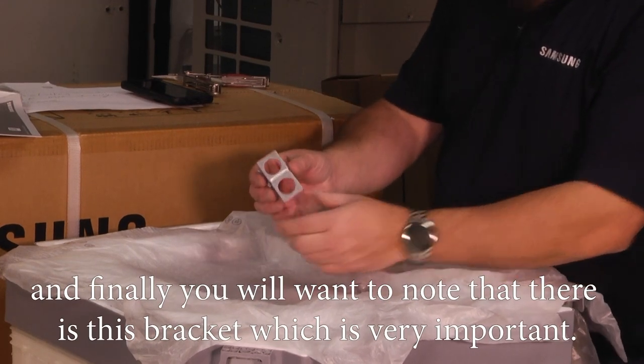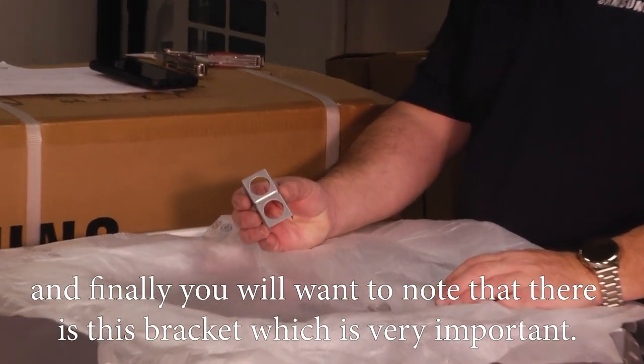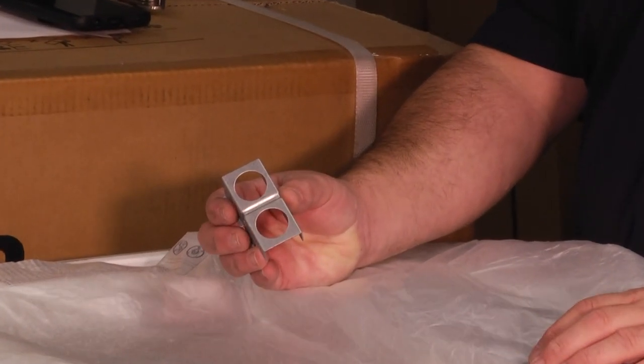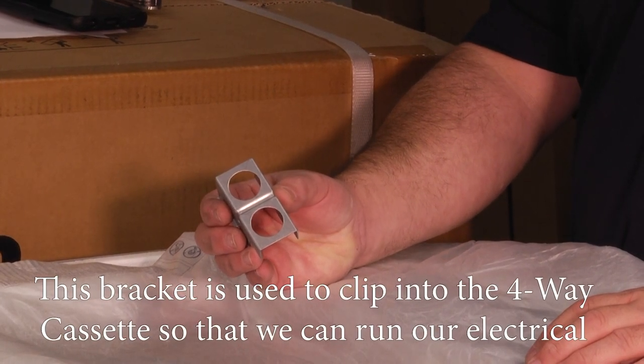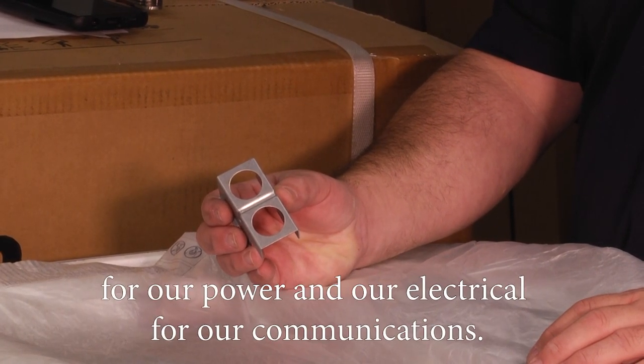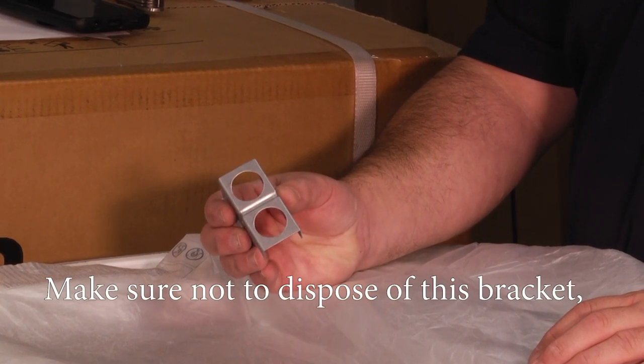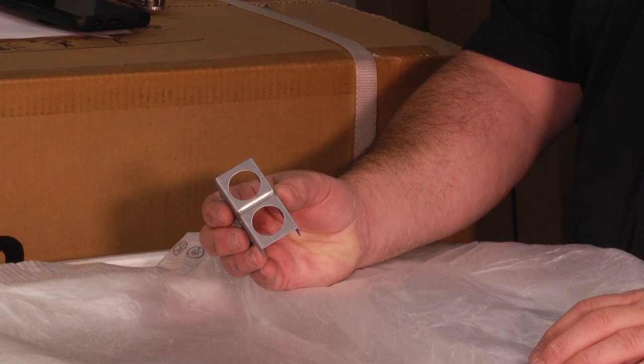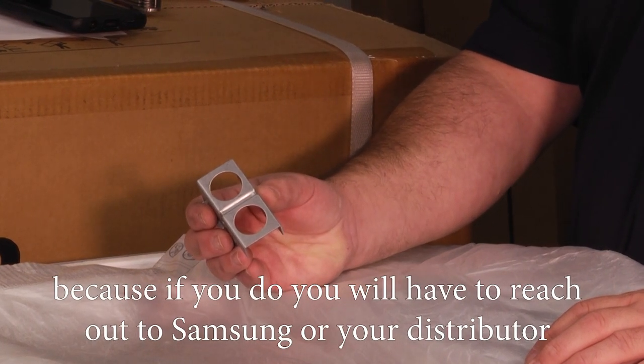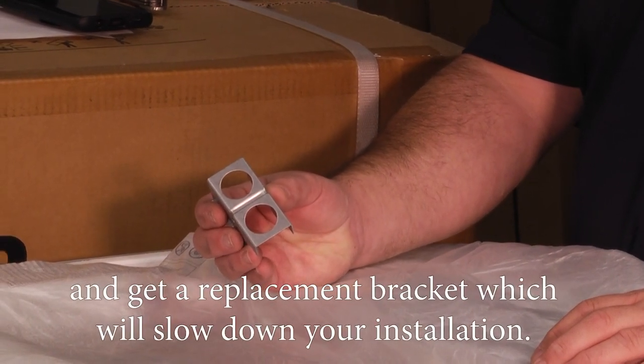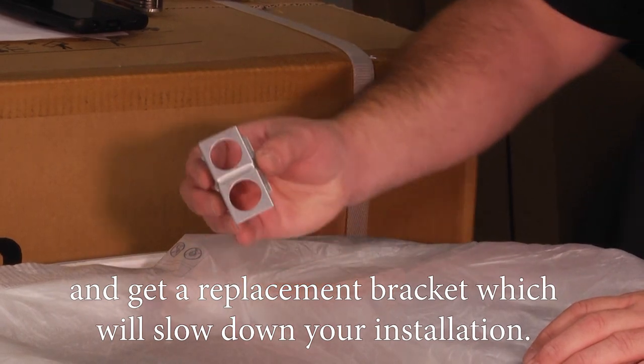Finally, you'll want to note that there's this bracket, which is very important. This bracket is used to clip into the four-way cassette so that we can run our electrical for our power and our communications. Make sure not to dispose of this bracket, because if you do, you'll have to reach out to Samsung or your distributor and get a replacement bracket, which will slow down your installation.